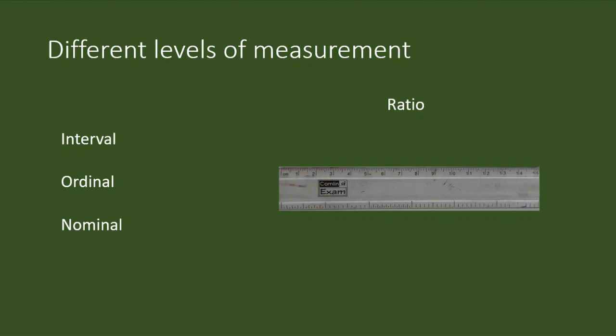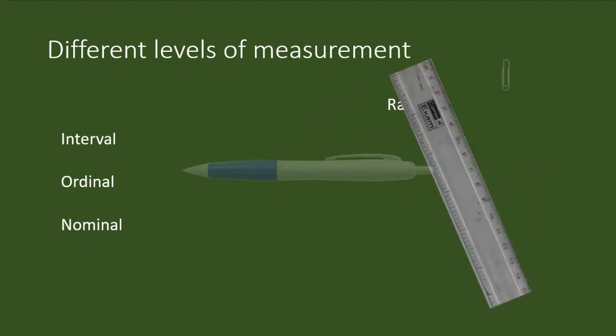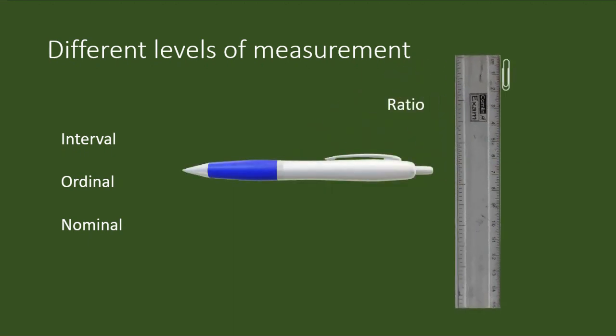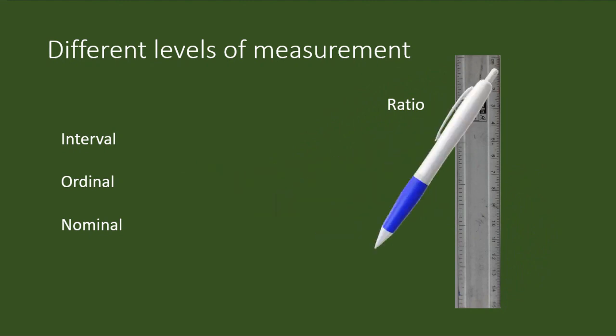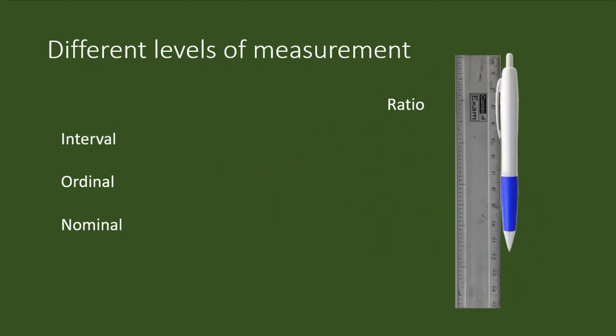In a centimeter scale, we use the ratio level of measurement. See this paper clip. We can specifically say this paper clip is of 2 cm length. And this pen is of 12 cm length.